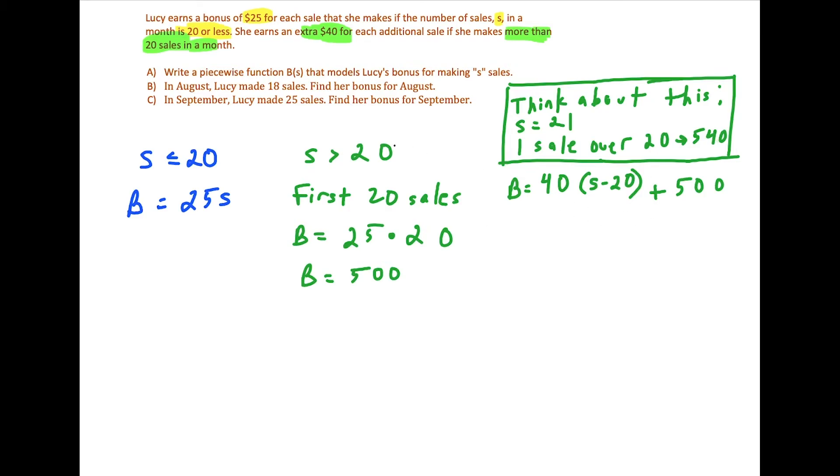Okay, so now we're ready to combine these two equations from these two different domains to write our piecewise function. So we're going to name our piecewise function B of S. And we'll draw in our brackets. And we're going to write the first domain first. When S is less than or equal to 20, the equation is 25 times S. And for the next domain, when S is greater than 20, we have 40 times S minus 20 plus 500. And remember, this is for when Lucy makes more than 20 sales. Okay, and once again, this function does make sense because when Lucy makes more than 20 sales, it accounts for the fact that she already made 20 sales. So she has $500 of profit already locked in. So now this completes part A for us.